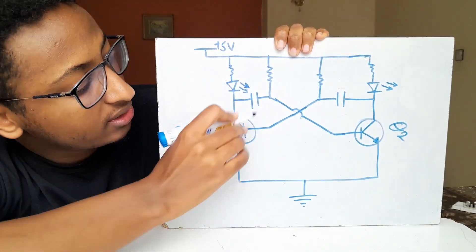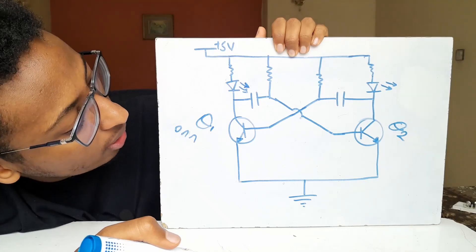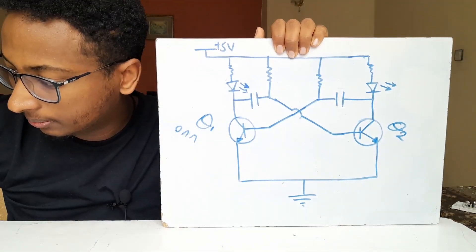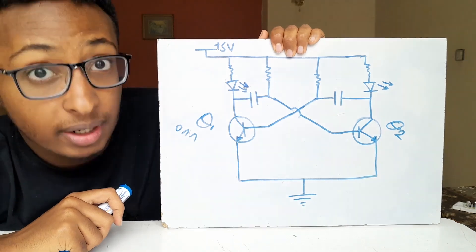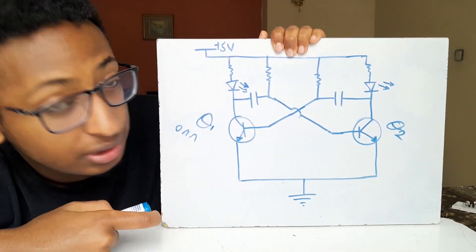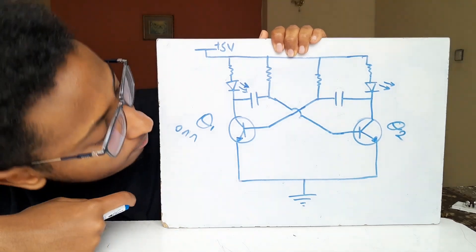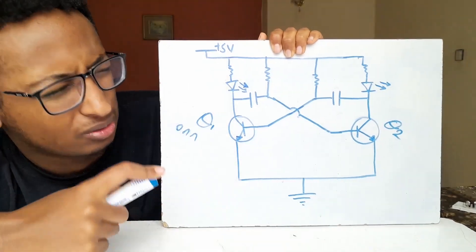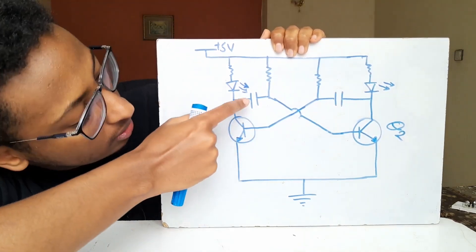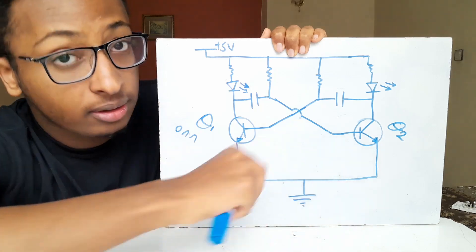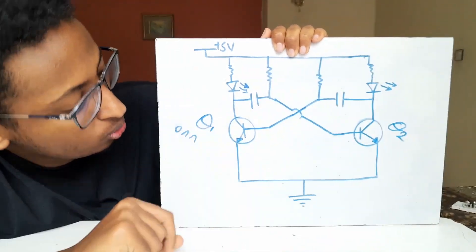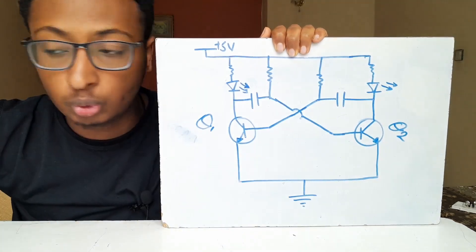While Q1 is on, the capacitor on that side will create a half voltage inside, keeping Q1 running for a moment. Meanwhile, the capacitor on the other side starts to build up charge, which eventually reaches the threshold voltage of the transistor — about 0.7 volts for the 2N2222 BJT I'm using. Once that threshold is reached, that capacitor begins to discharge immediately, which turns Q2 on and triggers the other side.